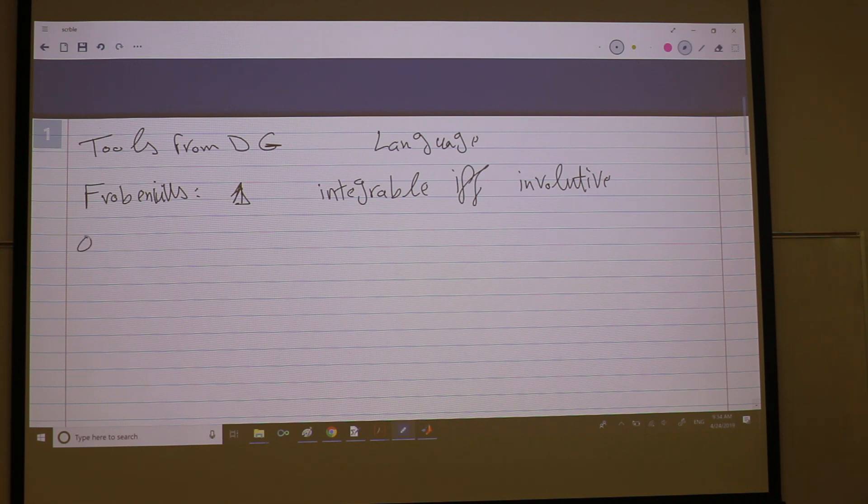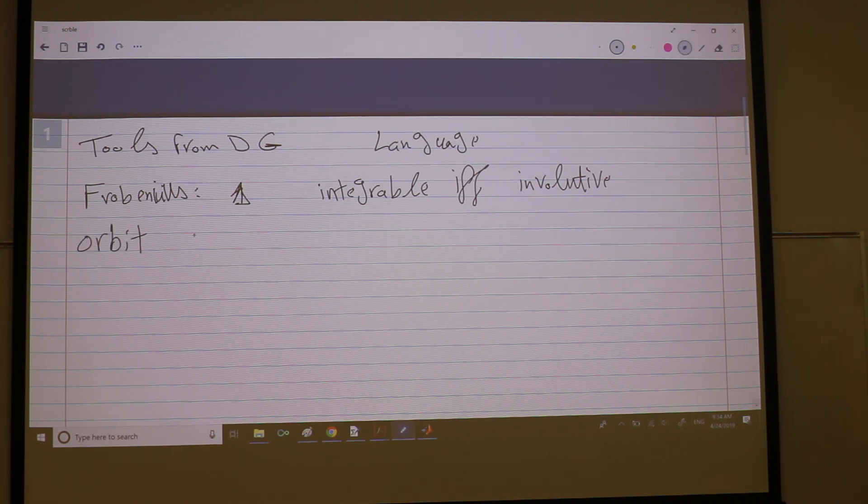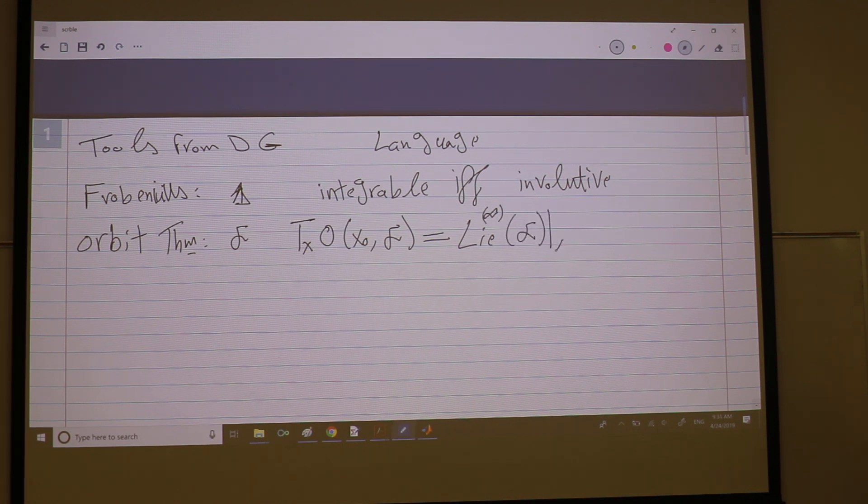And we got what sometimes people refer to as the orbit theorem. We have a family of vector fields, so the tangent space to the orbit of this family through a point is given by the infinity of the family at that point, for all x in the orbit.